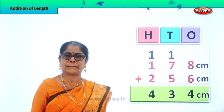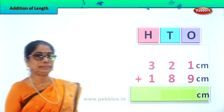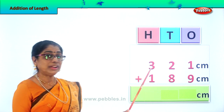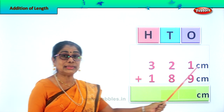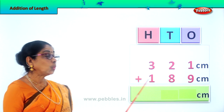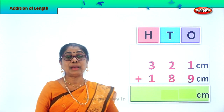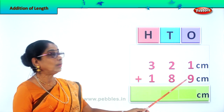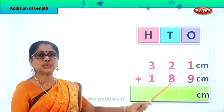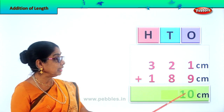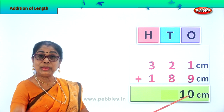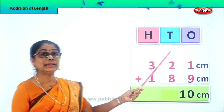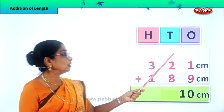Let's look at another sum. Again this sum is also arranged in 1's, 10's, 100's order. 321 centimeters plus 189 centimeters — how much do we get? Let's add the 1's in the 1's place. 9 plus 1 is 10. We leave the 0 in the 1's place. This 1 ten we take and put it in the 10's place, so 1 goes up here.